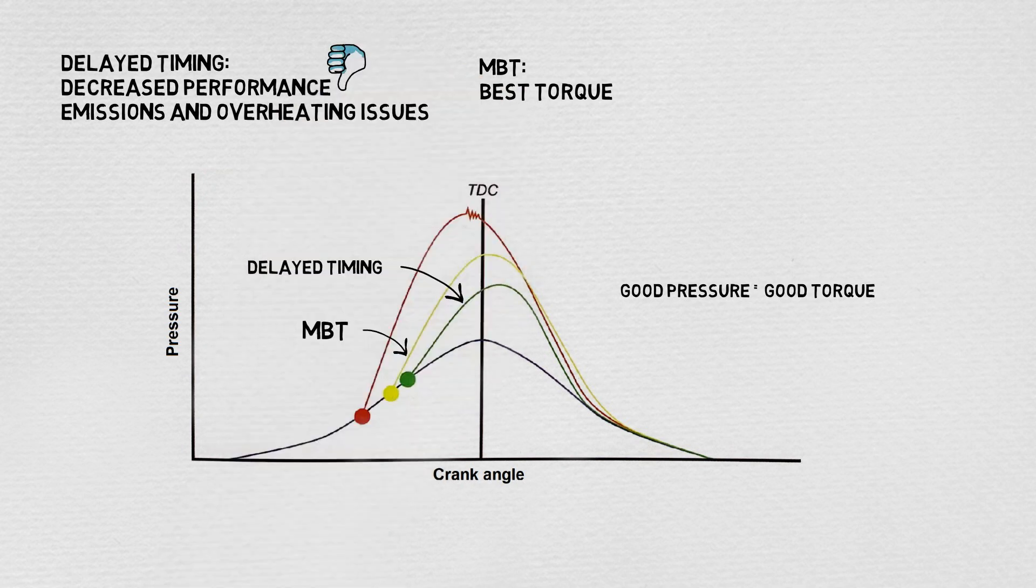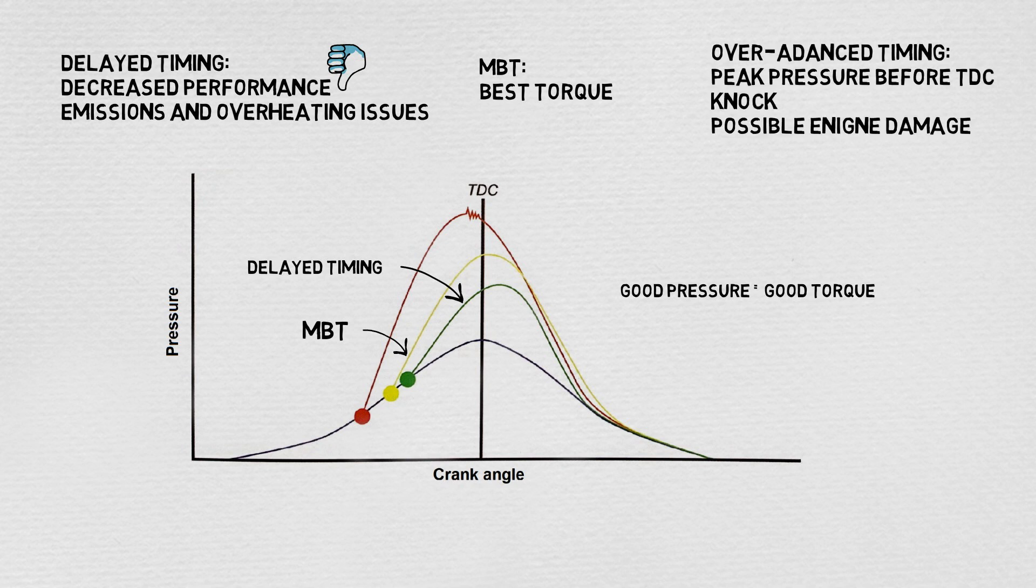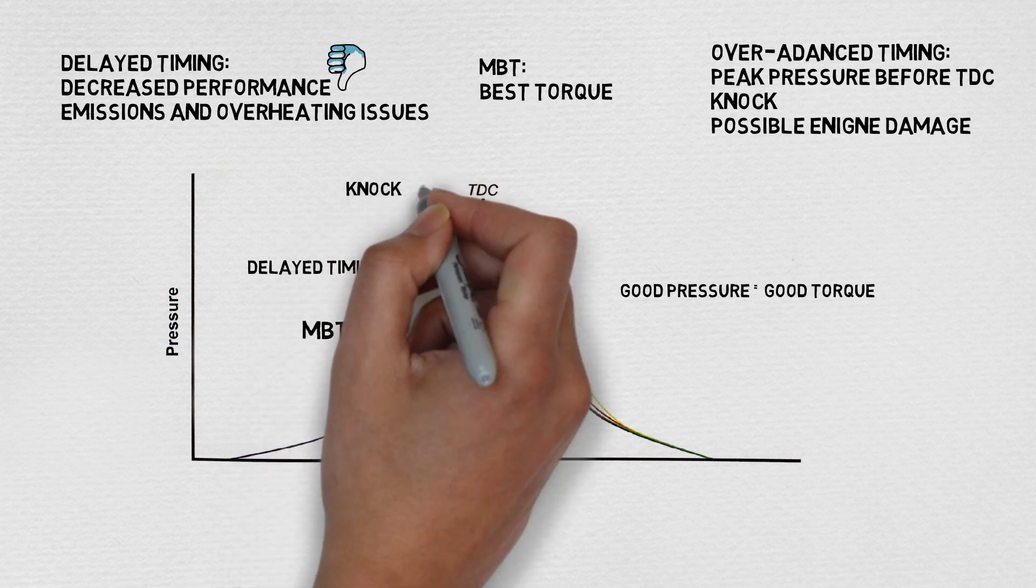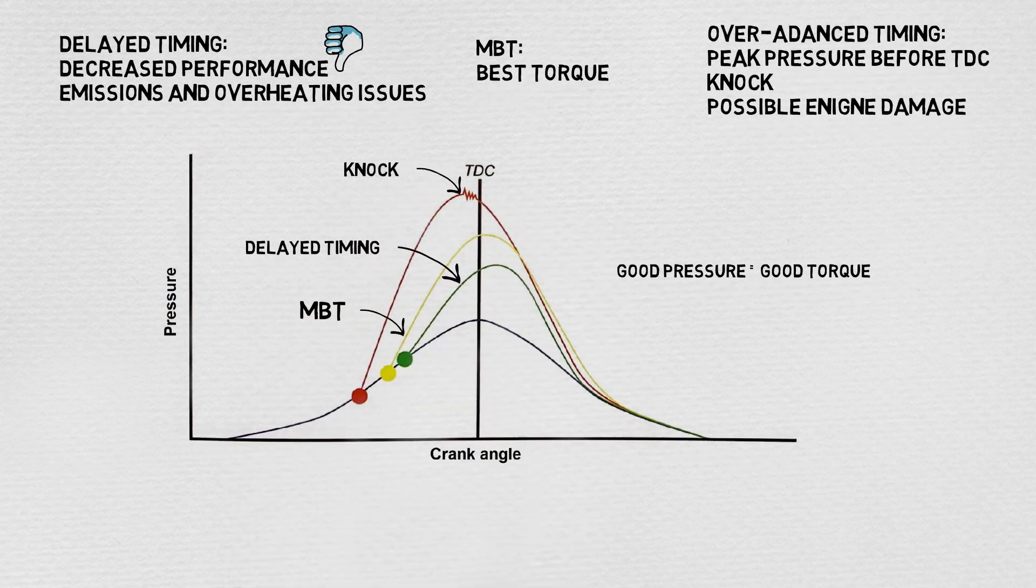On the other hand, if ignition starts too soon, peak pressure will be reached before the piston even gets to top dead center. On this scenario, the piston finds itself fighting against very large forces as it moves up on the compression stroke. This often creates a large amount of knock and therefore possible damage to your engine.